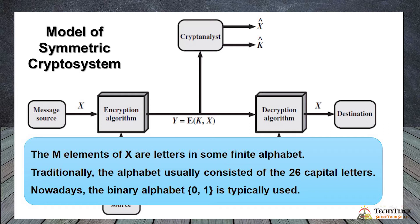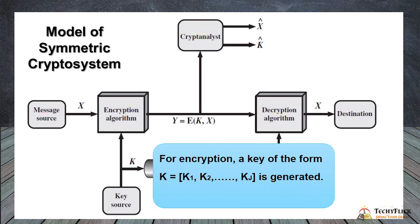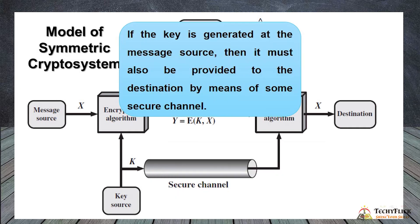Traditionally, the alphabet usually consisted of the 26 capital letters. Nowadays, the binary alphabet {0, 1} is typically used. For encryption, a key of the form k1, k2 to kj is generated — key values are k1, k2 up to kj, denoting n number of keys.